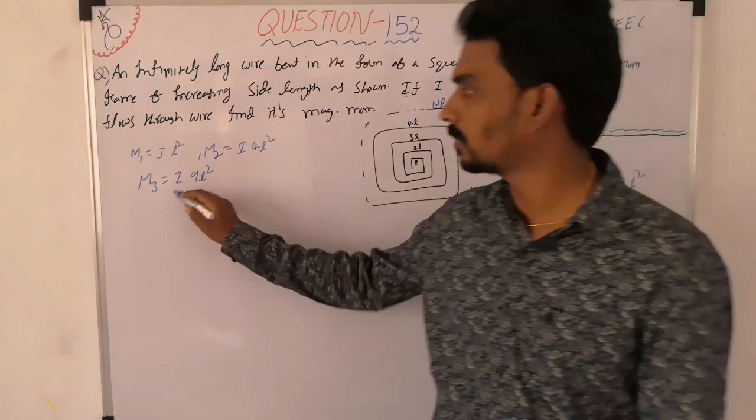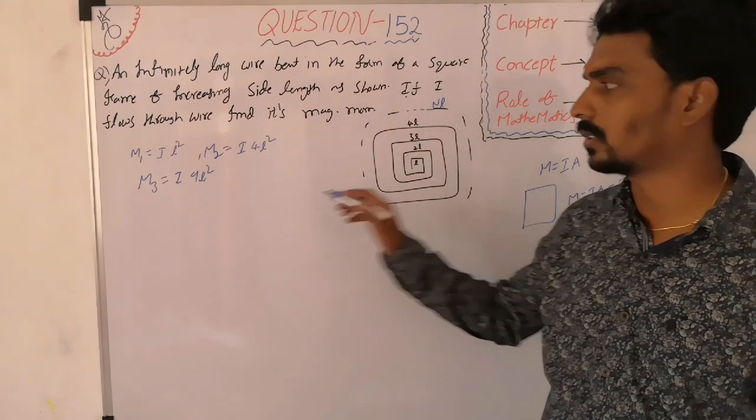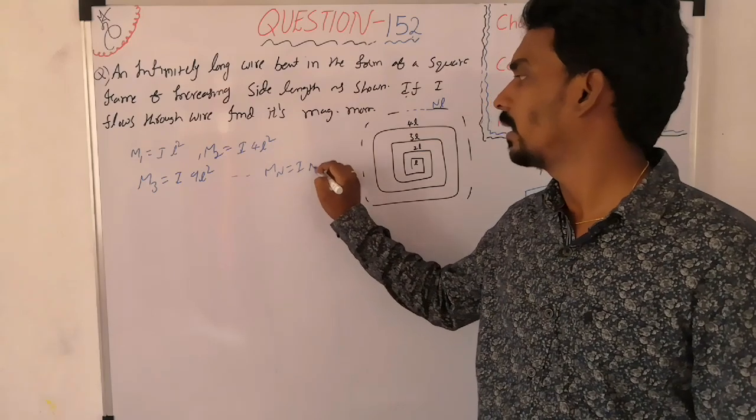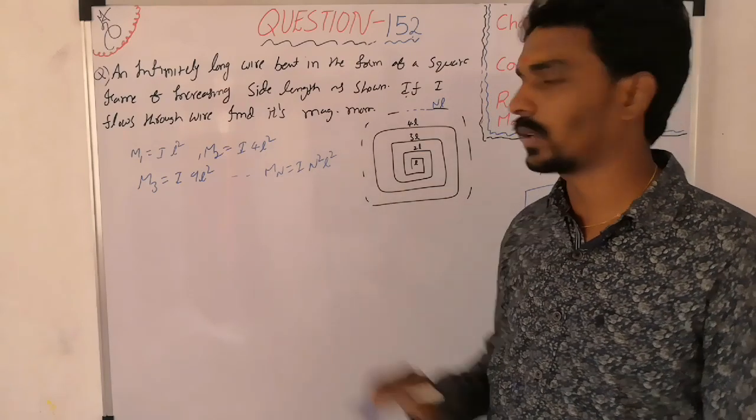M2 equals I times 4L square, M3 equals I times 9L square, and so on. MN is I times N square times L square.